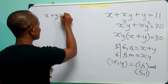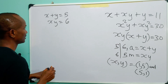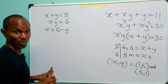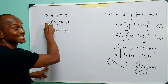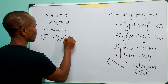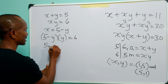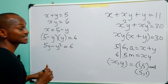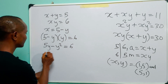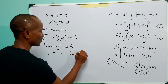Now we solve the second case: x plus y equals 5 and x times y equals 6. From the first equation, x is equal to 5 minus y. Substituting this for x in the second equation, we have 5 minus y multiplied by y is equal to 6. Expanding, we have 5y minus y squared is equal to 6. Taking everything over to the right hand side, we have 0 is equal to 6 minus 5y plus y squared.